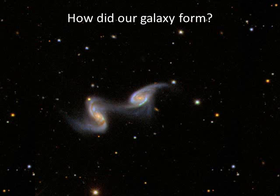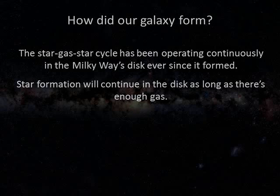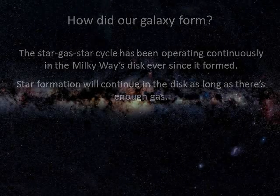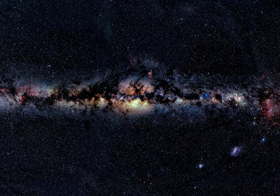Astronomers have observed that many other galaxies experienced similar collisions early in their history, and the Milky Way itself is still adding small numbers of stars in similar processes. Evidence also indicates that after the Milky Way's disk was in place, the star-gas-star cycle gradually increased the disk's heavy element content. This star-gas-star cycle has been operating continuously in the Milky Way's disk ever since it formed, and we expect star formation to continue in the disk as long as enough gas remains within it.